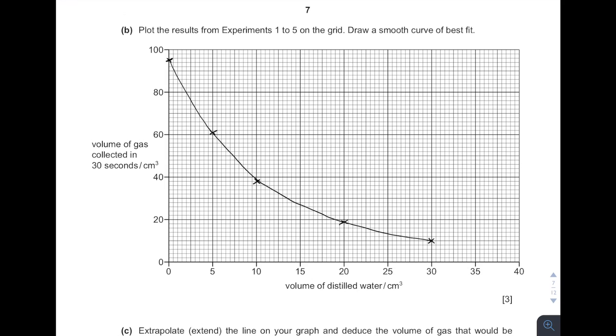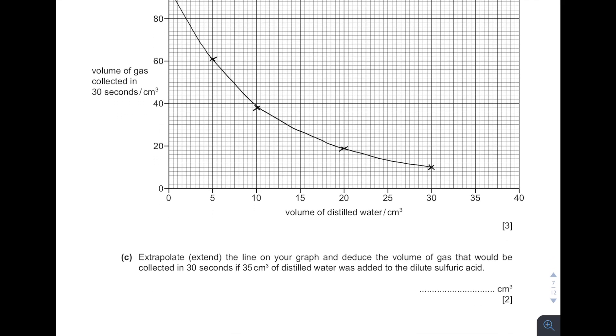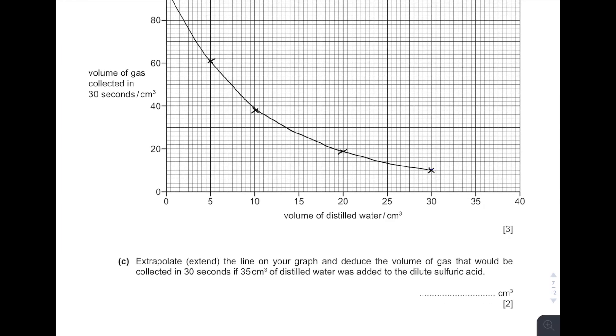And then eventually, plot the graph. So this is how it looks like. See, followed by a smooth curve. You have to join all the spot, and this is the curve that you will obtain. And then extrapolate or extend the line on your graph and deduce the volumes of gas that would be collected in 30 seconds. So which means you continue. So in 30 seconds, if 35 cm³ was added, you extend until 35. So follow the patterns of the graph. So you follow which eventually you look something like this. Just follow. So based on what I obtained here, it is around 8. This is 10. So over here, 8 cm³.